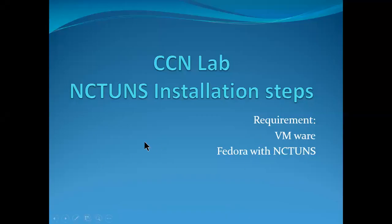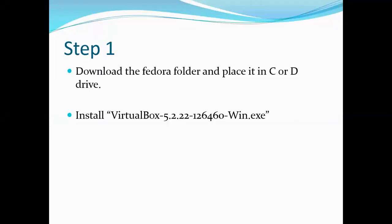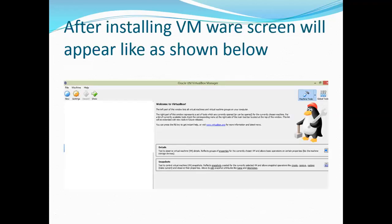In this video we'll be discussing the installation of NCDNS. The requirements are that you should have installed the VMware application and downloaded the Fedora software, which is 1.6 GB. You should have downloaded the Fedora software shared with you, placed it in some drive, and remember where you placed it, and then installed the VirtualBox application.